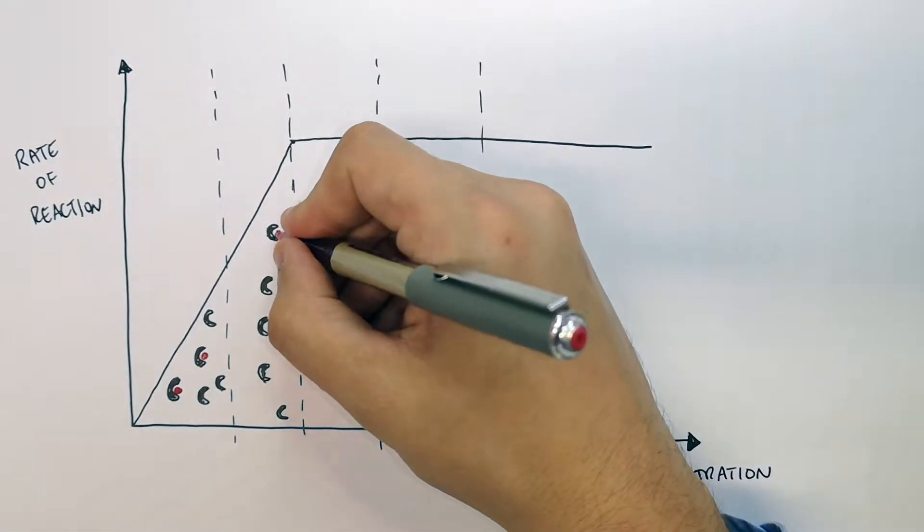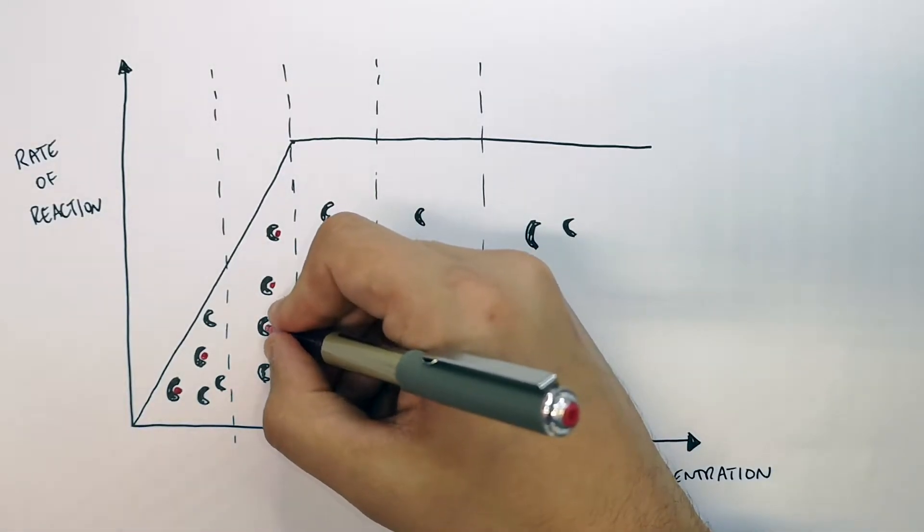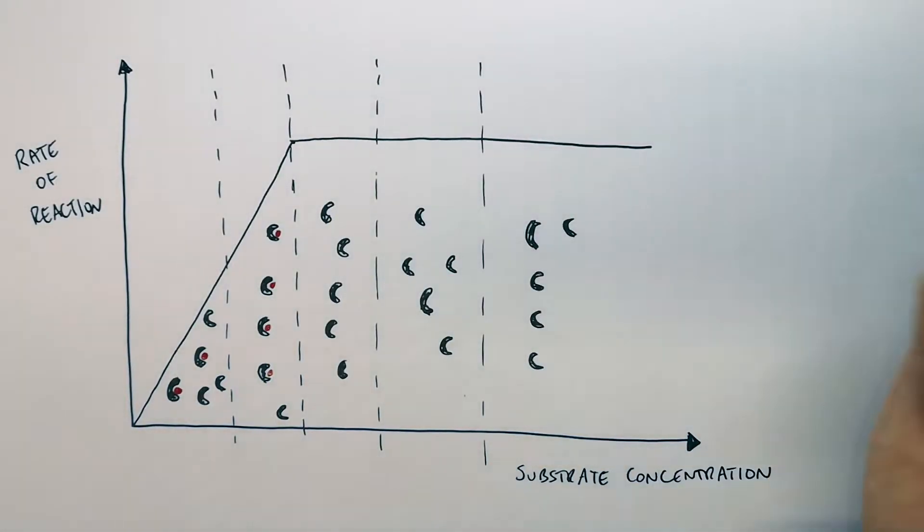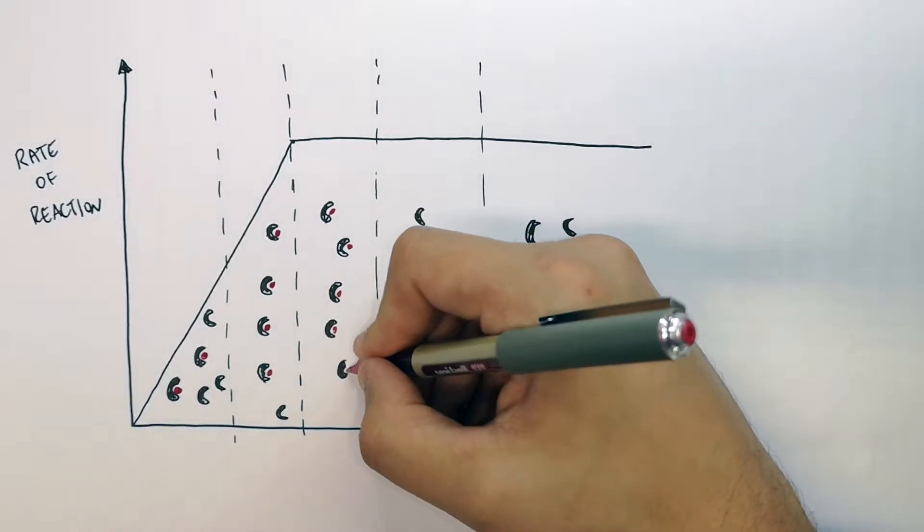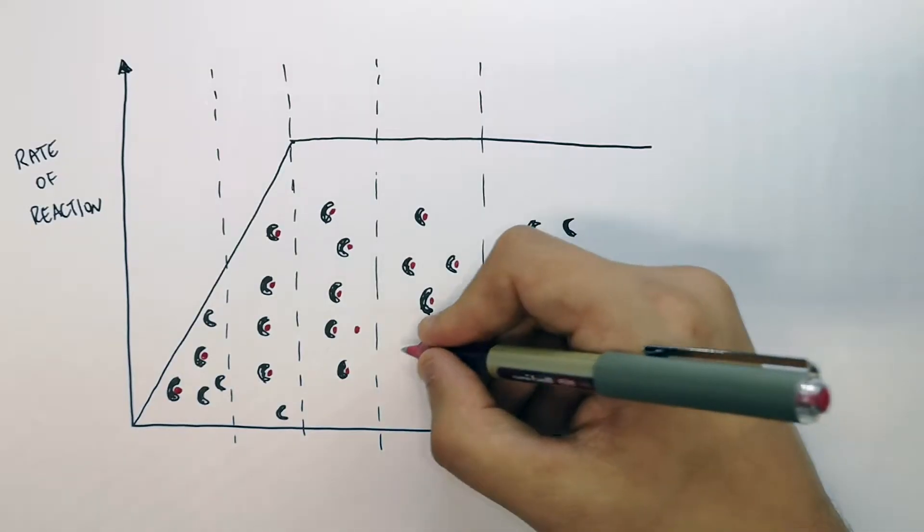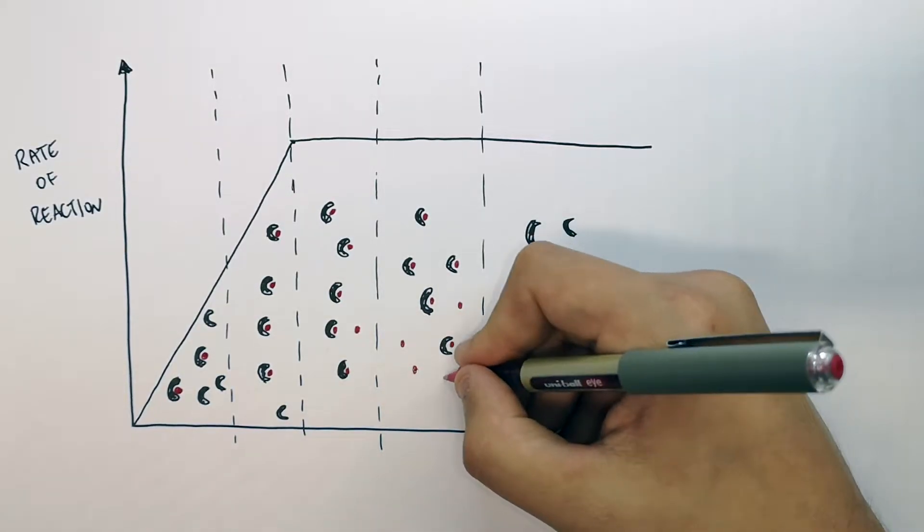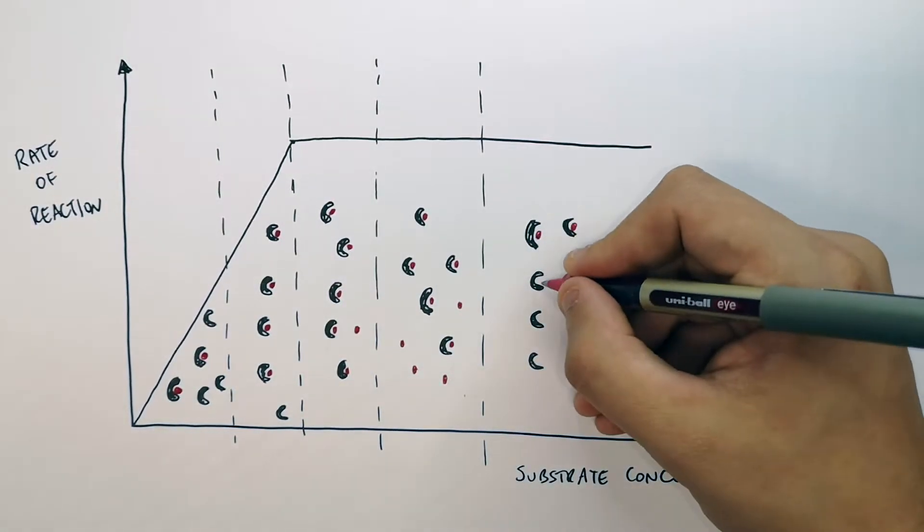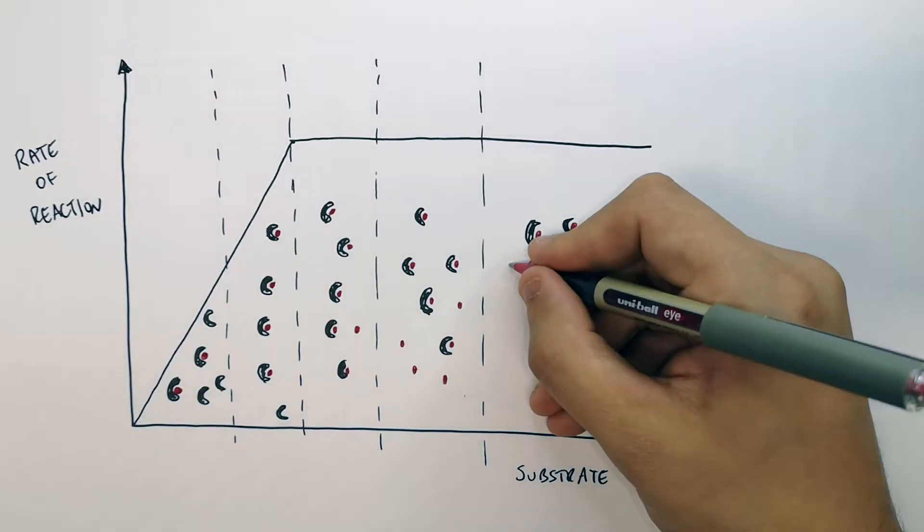What is going to increase are the numbers of substrate. I am not increasing the enzyme, but I am increasing the substrate concentration at each point. There's more substrate concentration now in the fourth column than there was in the first, and now there's going to be an excess of substrate concentration at these points.